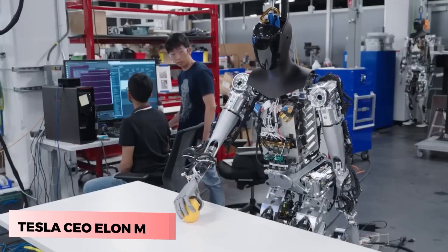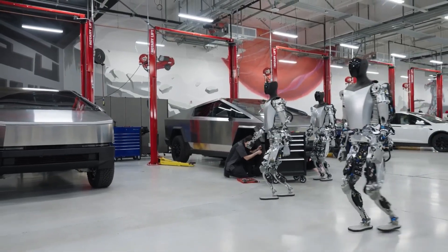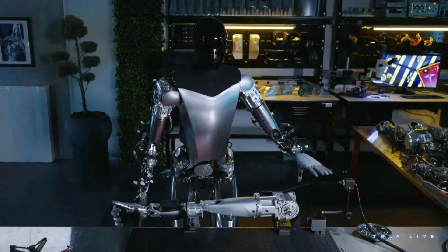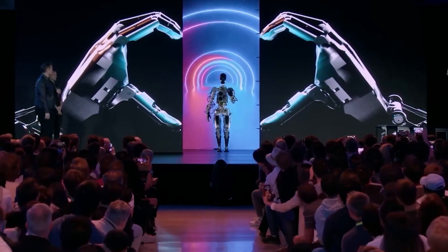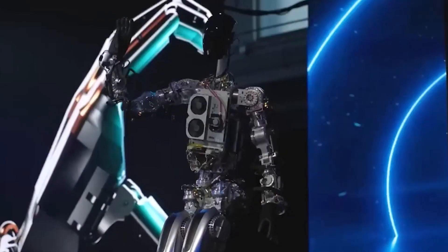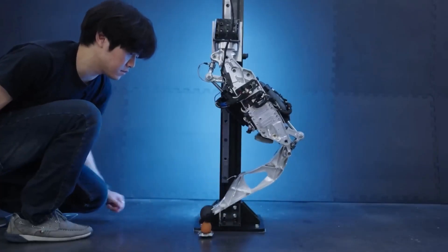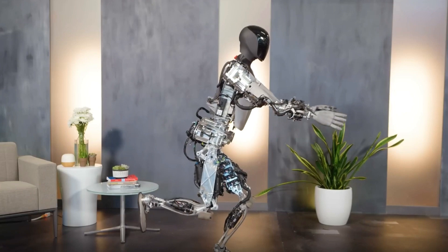Tesla CEO Elon Musk claimed that Optimus has the potential to be more significant than the vehicle business over time, and that it will eventually be able to do anything that humans don't want to do. Tesla Bot Optimus is a visionary project by Tesla Inc. that aims to create a humanoid robot that can assist humans in various tasks and scenarios.